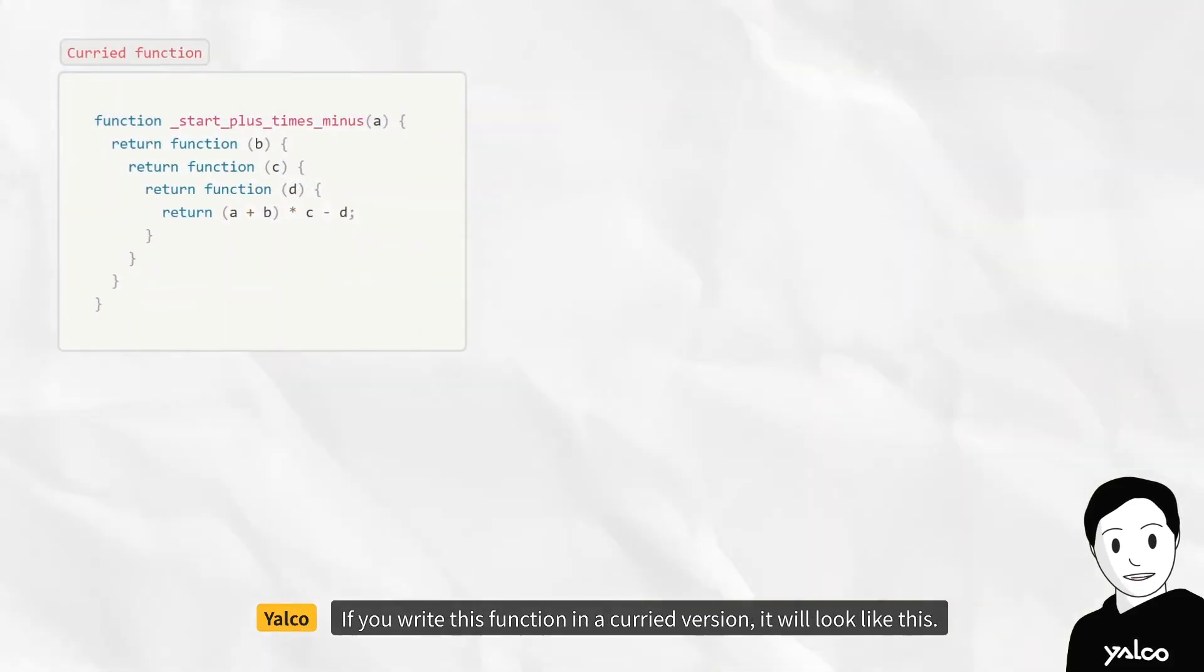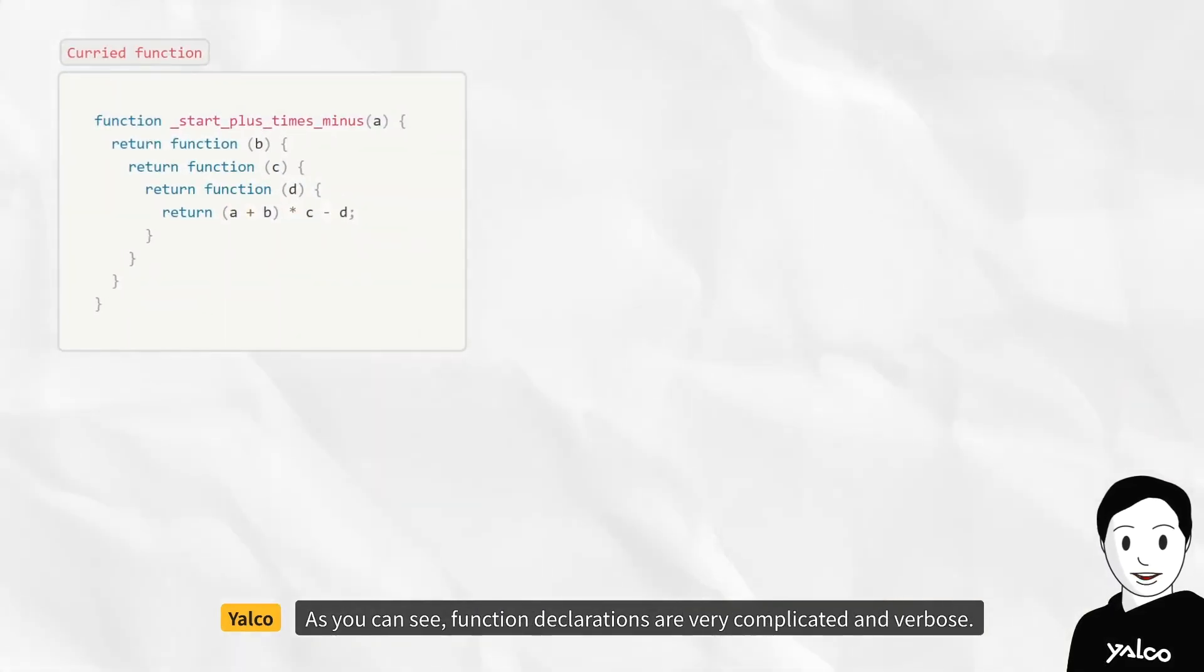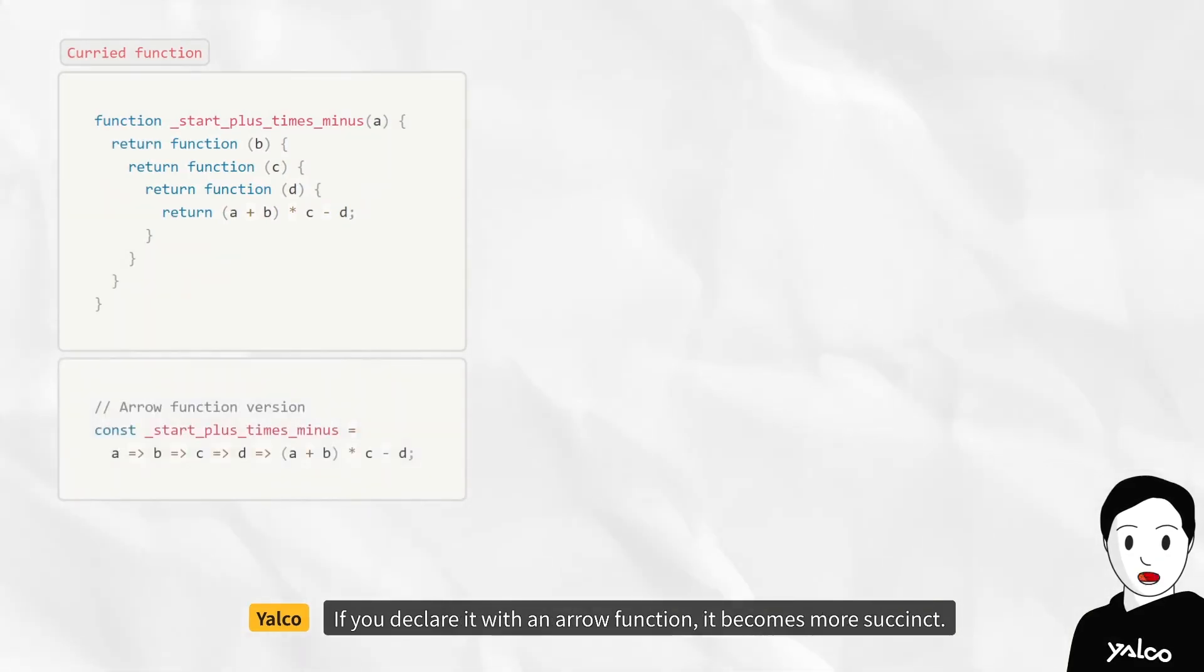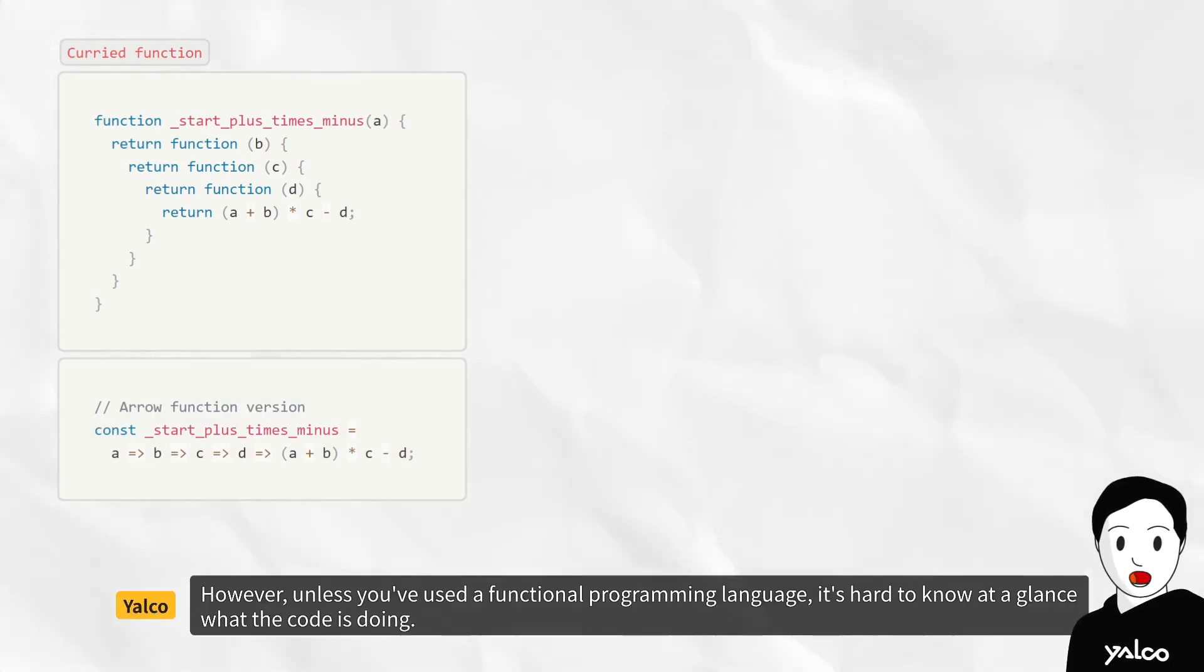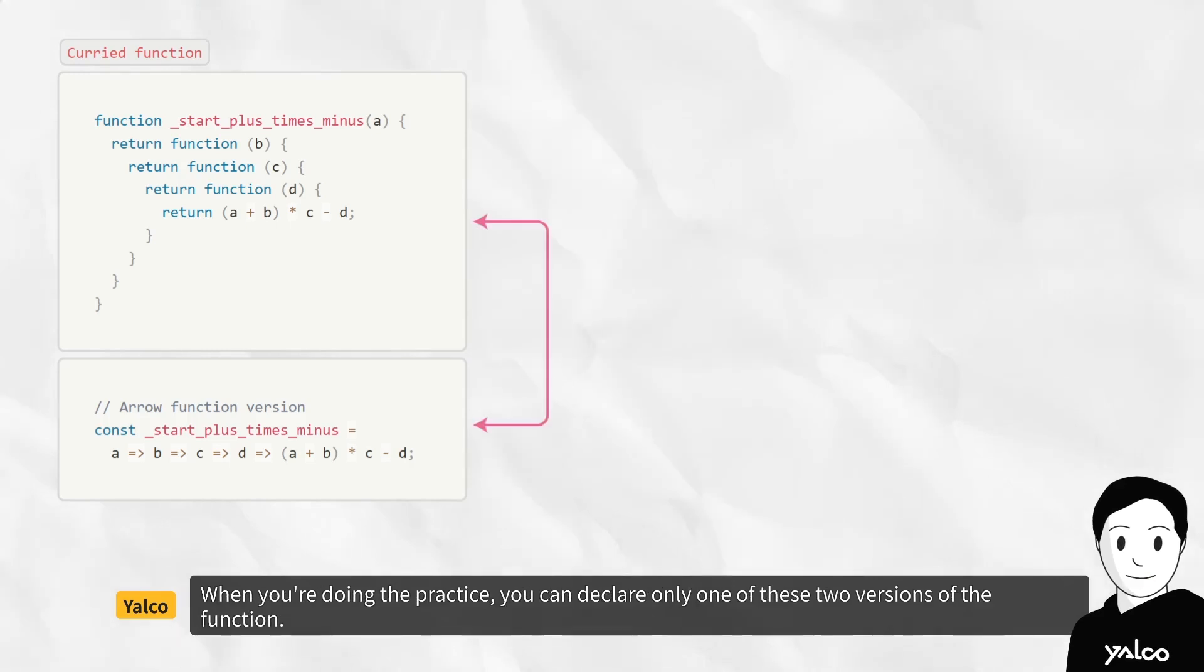If you write this function in a curried version, it will look like this. As you can see, function declarations are very complicated and verbose. If you declare it with an arrow function, it becomes more succinct. However, unless you've used a functional programming language, it's hard to know at a glance what the code is doing. When you're doing the practice, you can declare only one of these two versions of the function.